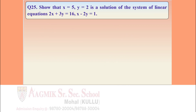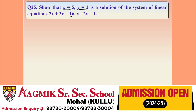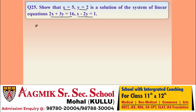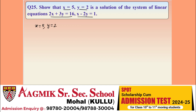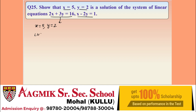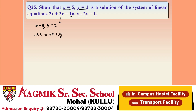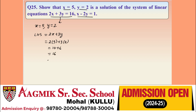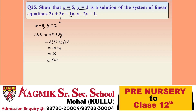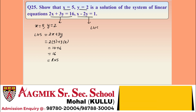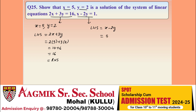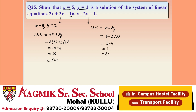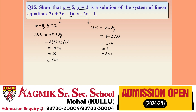Question 25: show that X = 5, Y = 2 is a solution of the system of linear equations. Substituting into the first equation: 2(5) + 3(2) = 10 + 6 = 16, which equals the right-hand side. For the second equation: 5 - 2(2) = 5 - 4 = 1, which also equals the right-hand side. Since both equations are satisfied, (5, 2) is a solution.